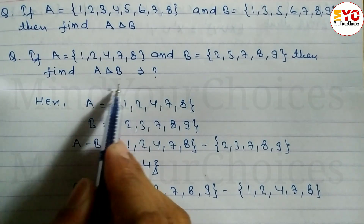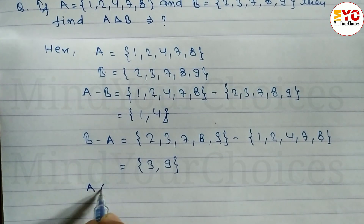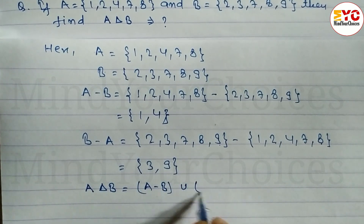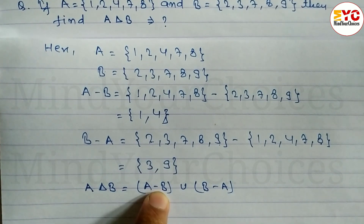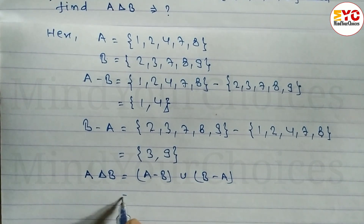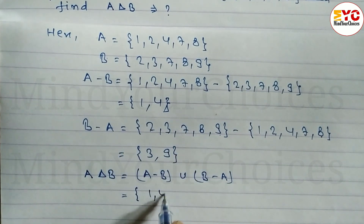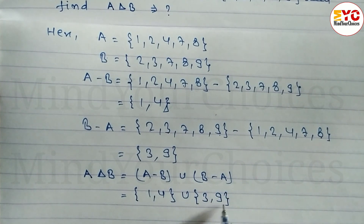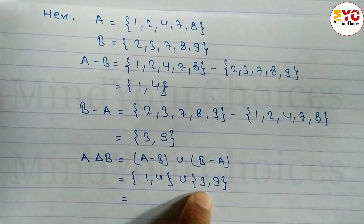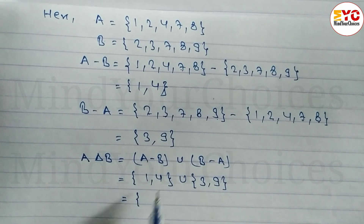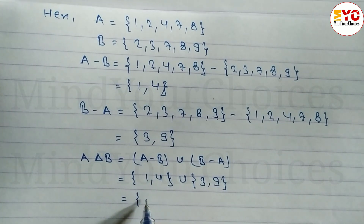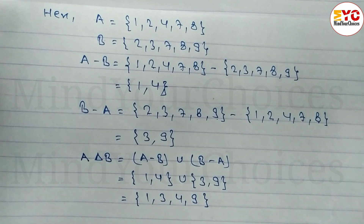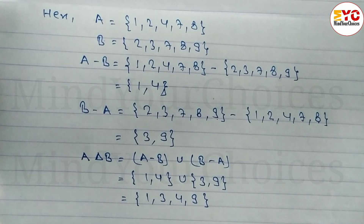Now finally we find A symmetric difference B. The formula is A symmetric difference B = (A minus B) union (B minus A). A minus B = {1, 4} and B minus A = {3, 9}. Union means we take all elements from both sets and write them in ascending order. So A symmetric difference B = {1, 3, 4, 9}, which is your answer. Hope you understand this question.